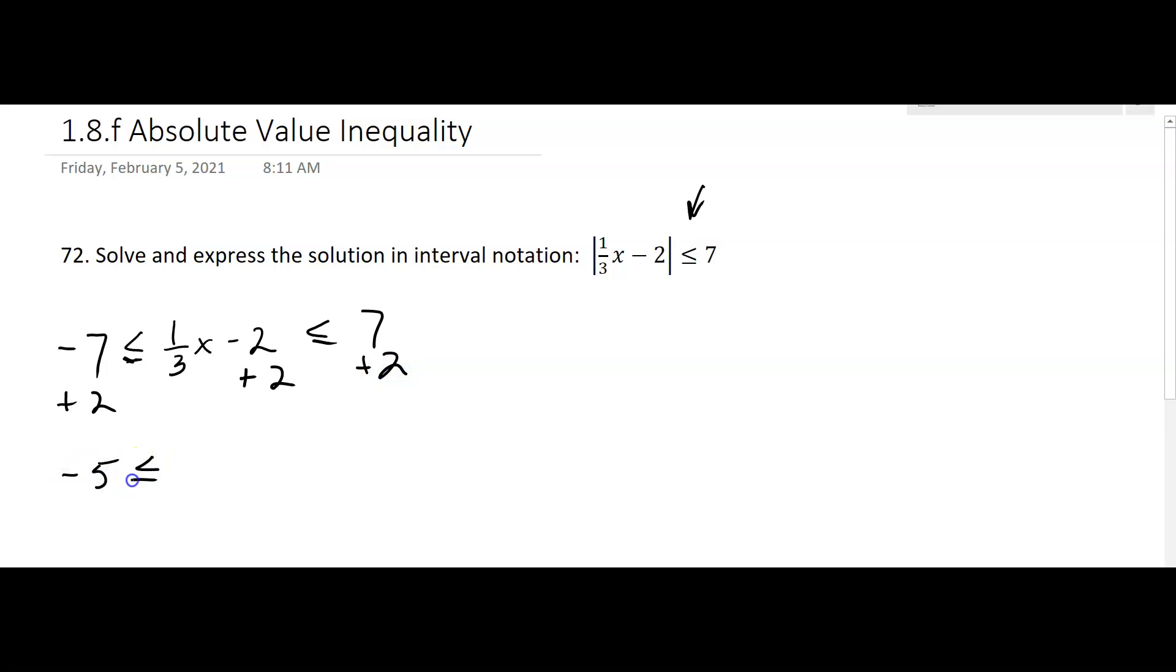We want to get rid of the 3, so we're going to multiply everything by 3, and that's going to give us negative 15 is less than or equal to x, which is less than or equal to 27.